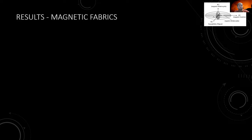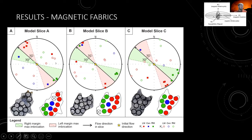Moving to the magnetic fabrics: in the top right corner is the AMS ellipsoid. Slices A, B, and C are examined by taking five-millimeter diameter cores from each slice — as many as possible. Using these cores, the AMS is measured and displayed on equal-area plots. Magma flow direction is shown by an arrow; the star is the initial flow direction; the long and short axes of the ellipsoids are shown as circles.